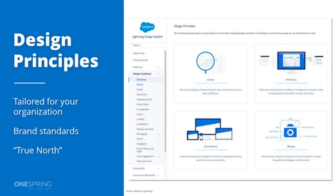In this example from Salesforce's design system called Lightning, some of their key principles are clarity, efficiency, beauty, and consistency. Keep in mind that there's really no one-size-fits-all with design systems — yes, there are certain things you'll find in every single one, like design principles, components, and a visual language tied to their brand.